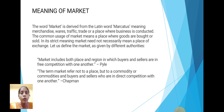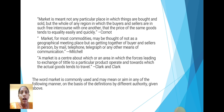Market includes both place and region in which the buyer and seller are in free competition with one another. — Piley. The term market refers not to a place but to a commodity or commodities and buyers and sellers who are in direct competition with one another. — Chapman. Market is meant not any particular place in which things are bought and sold, but the whole of any region in which the buyers and sellers are in free intercourse with one another.